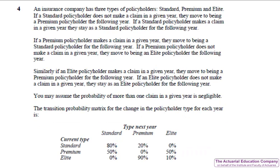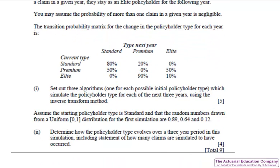Question four tests the inverse transform method for discrete random variables from chapter 14 of the notes. However, given that this was the worst answered on the paper, it seems that students freaked out at the number of words in this question. We're given the probabilities in the table below, supposing we start with a standard policyholder. At the end of the year, 80% of policyholders will remain in standard, and 20% will move to premium.